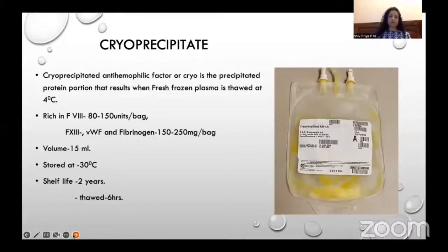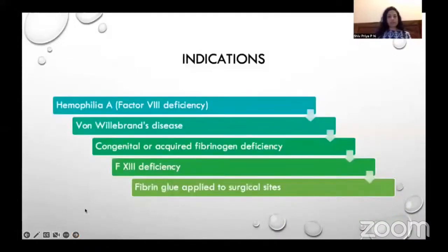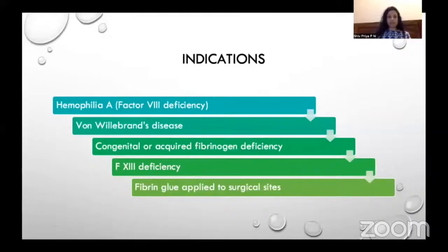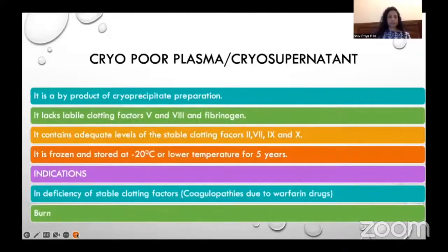Thawed cryoprecipitate must be infused within 6 hours. Its indications include congenital or acquired fibrinogen deficiency, factor 13 deficiency, von Willebrand disease, hemophilia A (factor 8 deficiency), and for fibrin glue applied to surgical sites.